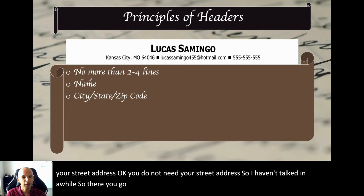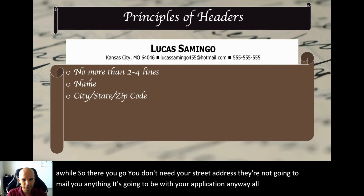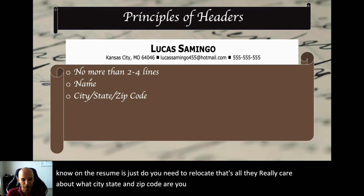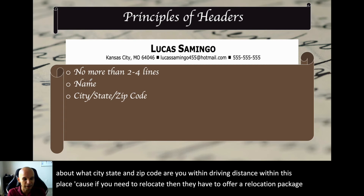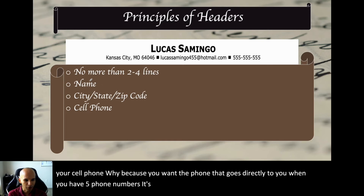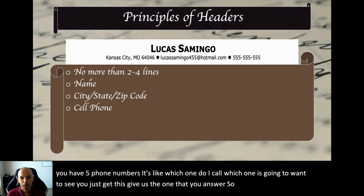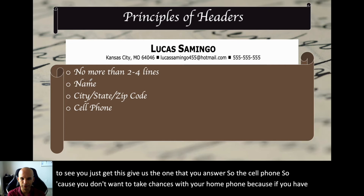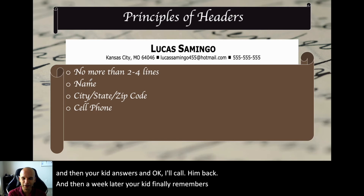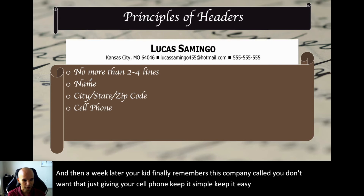For your phone number: a lot of people put home phone, office phone, fax — no. Just your cell phone. You want the phone that goes directly to you. When you have five phone numbers, the employer doesn't know which one goes to you. Just give the one you answer. You don't want to take chances with your home phone — if you have kids and the employer calls, your kid answers, and then a week later your kid finally remembers to tell you. Just give them your cell phone. Keep it simple. Also, make sure your voicemail inbox is set up and it's professional.